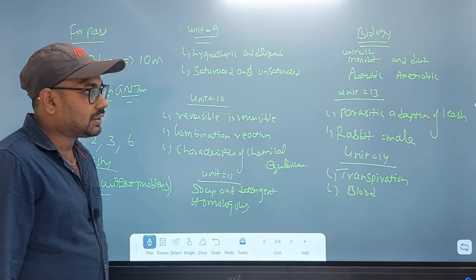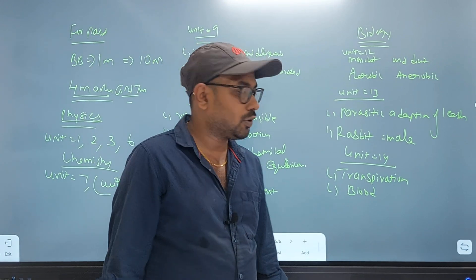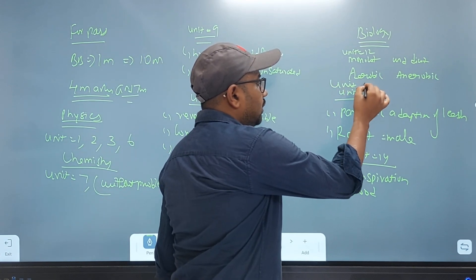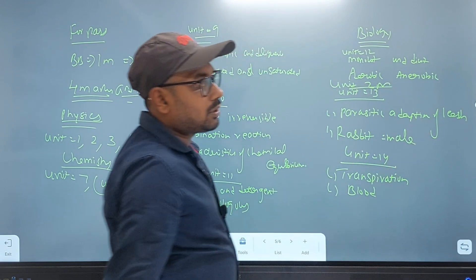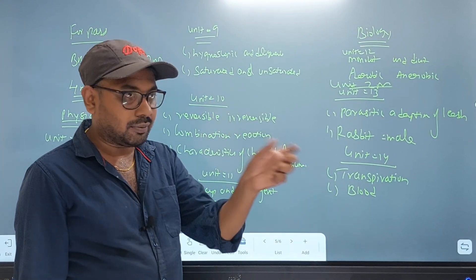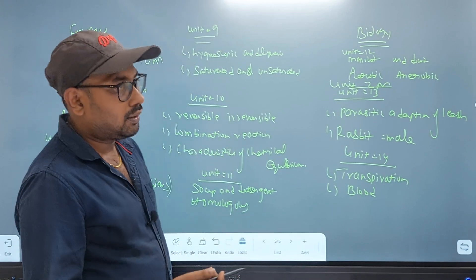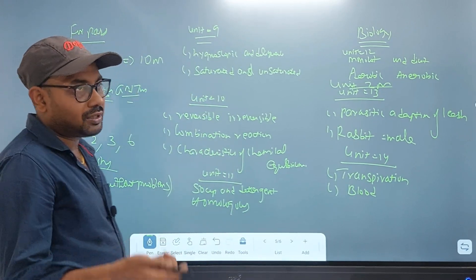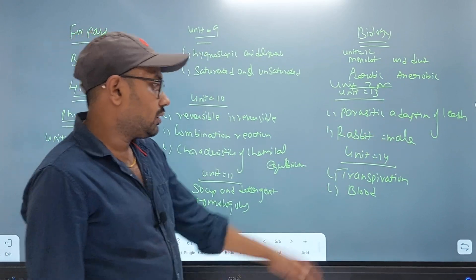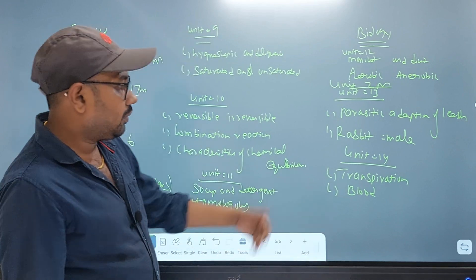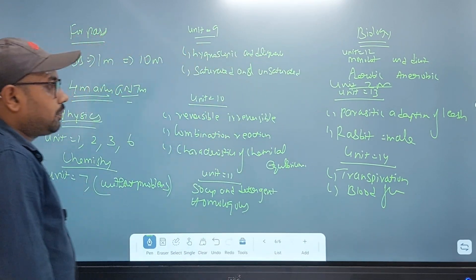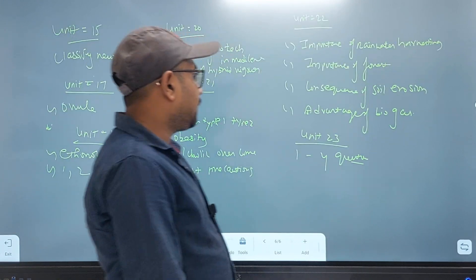In unit 13, parasitic — catastrophe of leech, rabbit. Rabbit is a male reproductive system. In biology, it is a 2 mark. In unit 13, it is a pure balance — rat, rabbit. In unit 14, it is a mithi function — blood function; it's very important. You can learn how to do it.